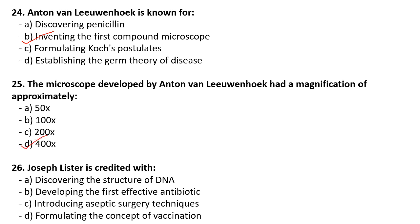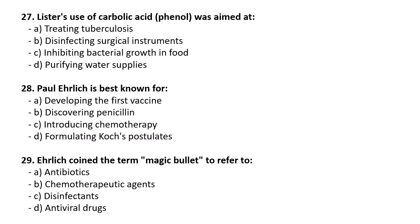Joseph Lister is credited with introducing aseptic surgery techniques. He used carbolic acid — that is phenol — for disinfecting surgical instruments. At that time sterilization had not yet been developed, so disinfecting surgical instruments was very necessary, and he used carbolic acid (phenol) for that purpose.